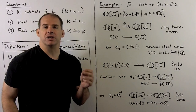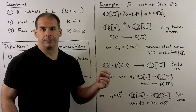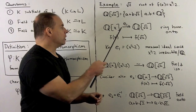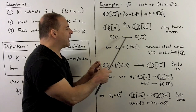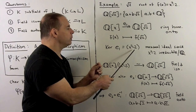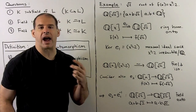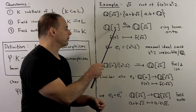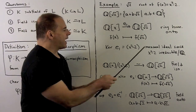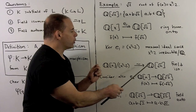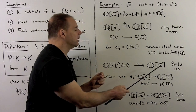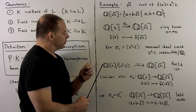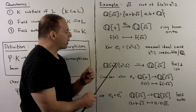We invoke the first isomorphism theorem for rings, so we need to identify the kernel. The kernel is the principal ideal generated by x² − 2. Since x² − 2 is irreducible over the rationals, it's a maximal ideal in Q[x]. That gives us a ring isomorphism — in this case a field isomorphism — between Q(√2) and Q[x] mod that maximal ideal.